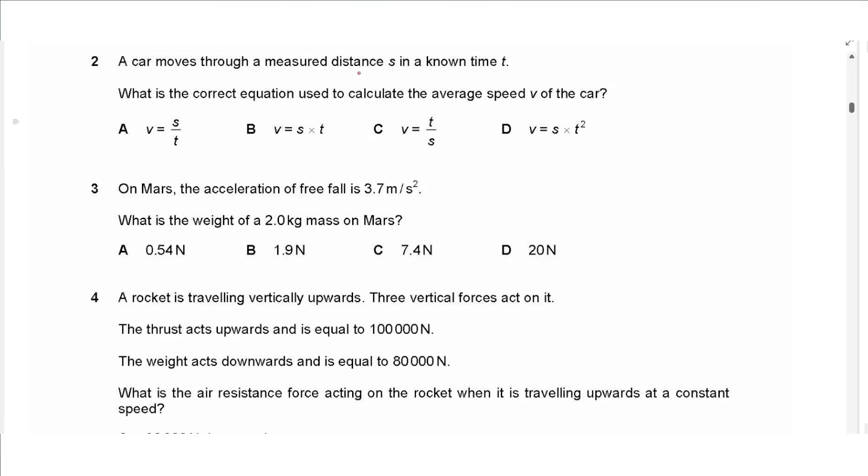Question two says a car moves through a measured distance S in a known time T. What is the correct equation used to calculate the average speed V for the car? So speed is equal to distance divided by time, so we choose A.